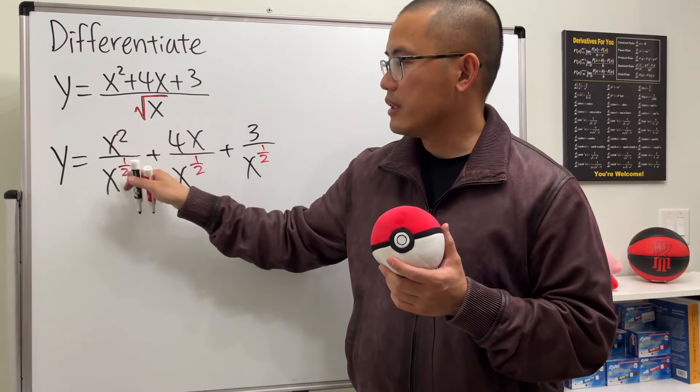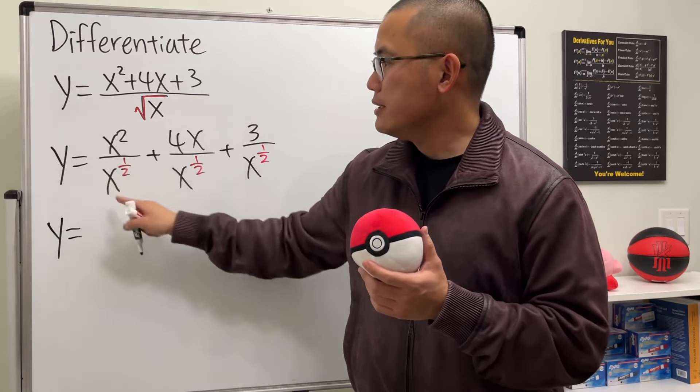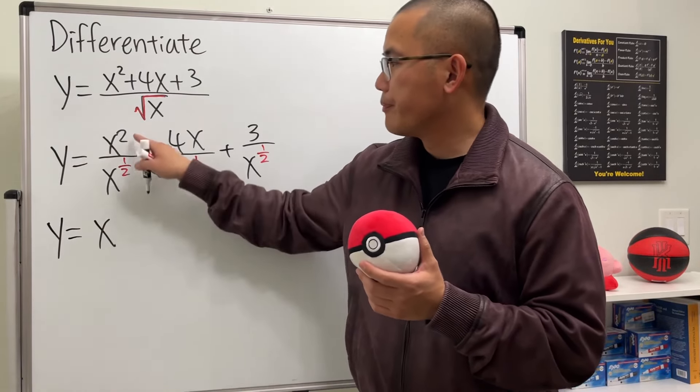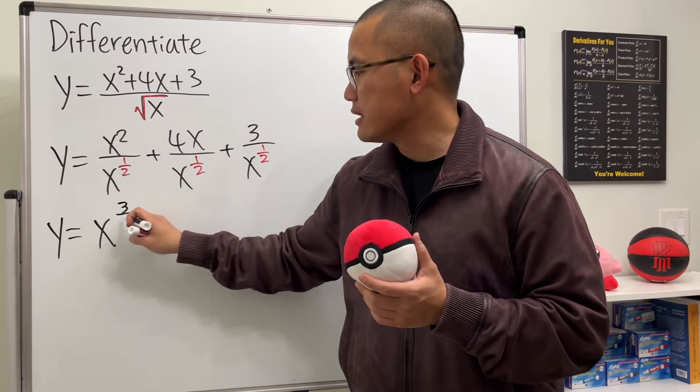And then we are going to subtract the exponents. So let's see, y is equal to, for this term, we will get x 2 minus 1 half, we will get 3 half. And that's positive.